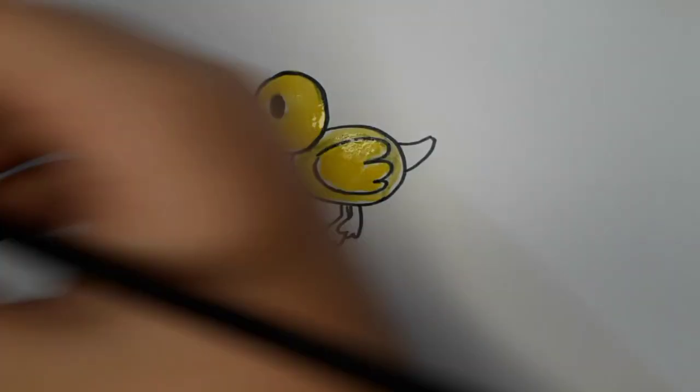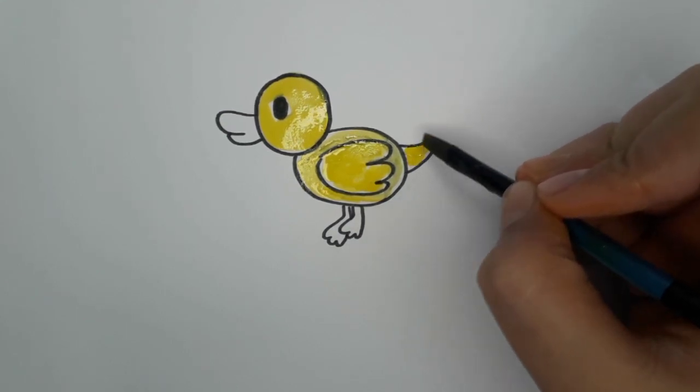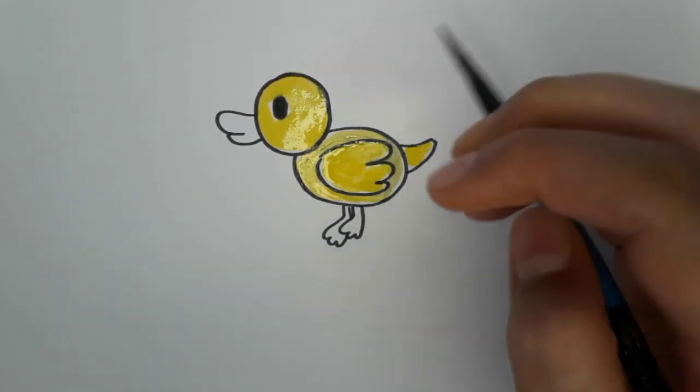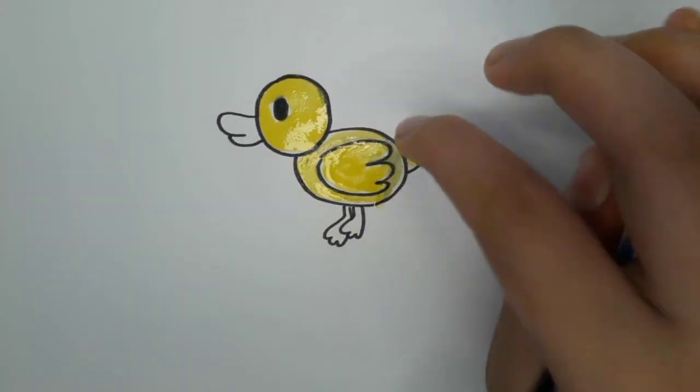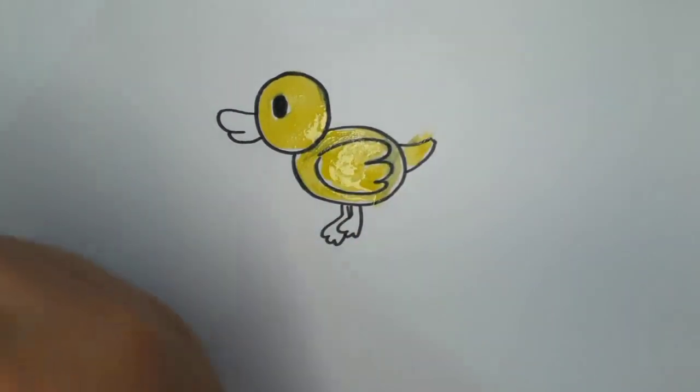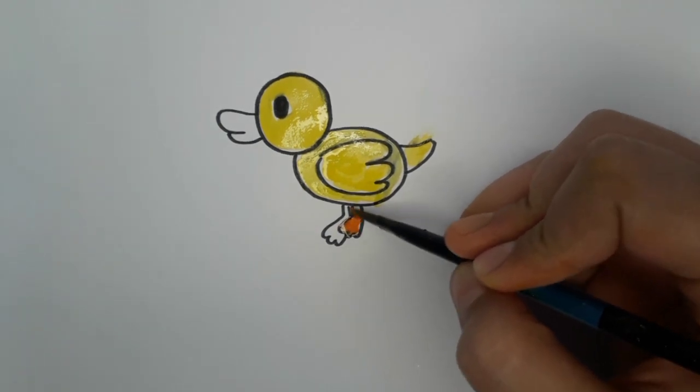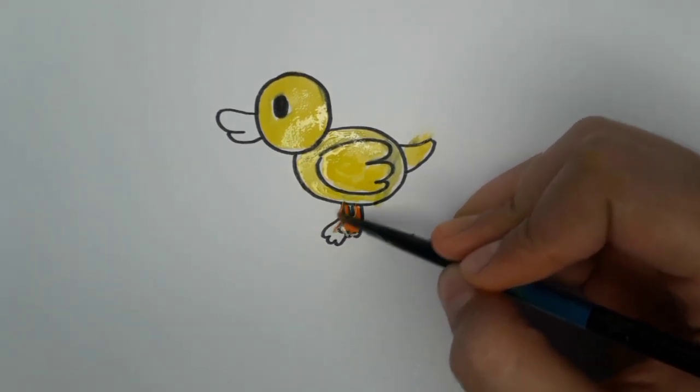Use real duckling pictures as your guide. There are tons online or maybe you can visit a park. Try cool marker tricks, like blending for smooth color changes or stippling for textured feathers. Practice makes perfect. The more you draw, the fluffier and cuter your ducklings will become.